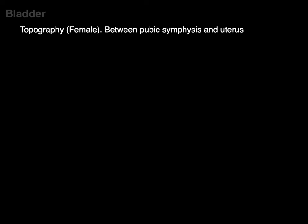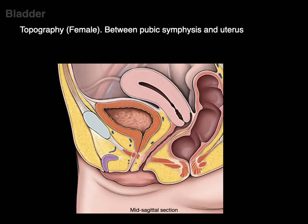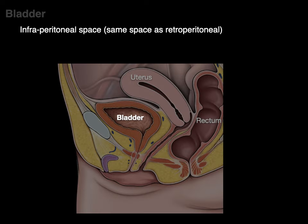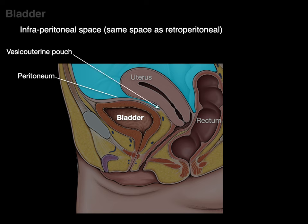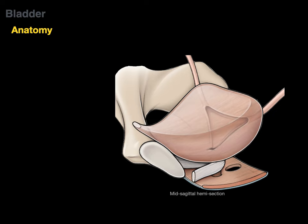The topography of the female bladder is between the pubic symphysis and the uterus. In this midsagittal section, the bladder is infraperitoneal, below the peritoneum, in the same fascial plane as the retroperitoneum. You'll notice the vesico-uterine pouch — vesico meaning bladder — and then the recto-uterine pouch of Douglas, which is the lowest part of the pelvic cavity where blood, pus, or endometrial tissue would accumulate.